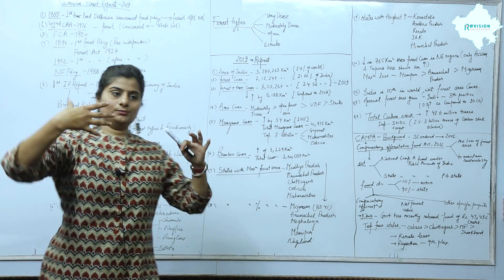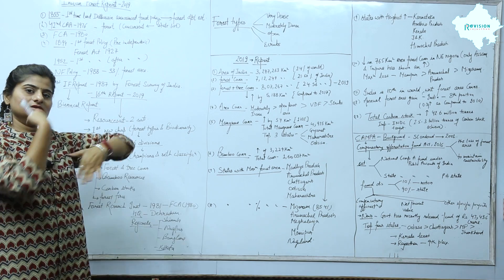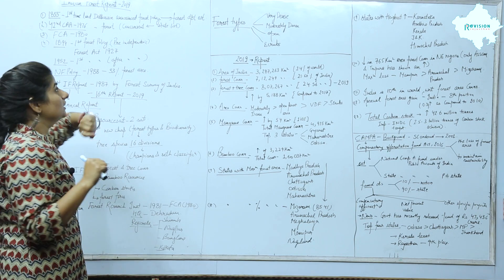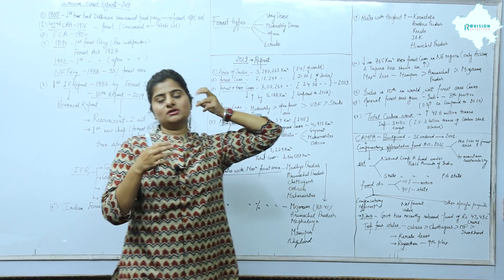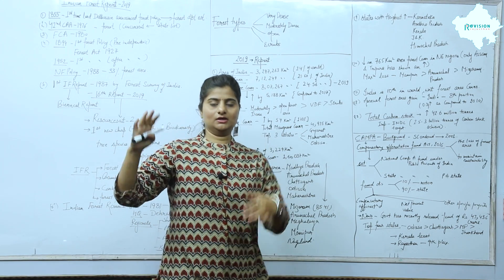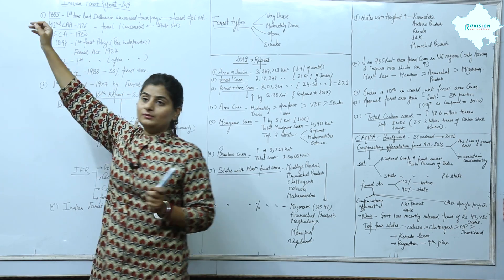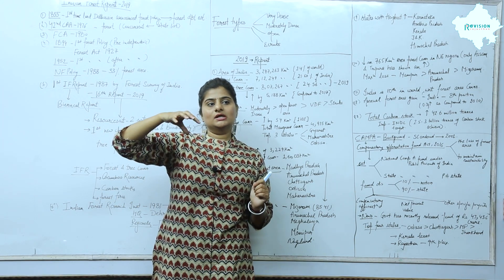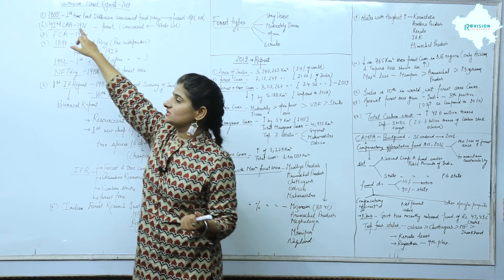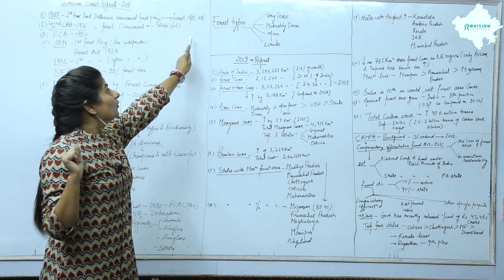First, in 1855, during the pre-independence era, Lord Dalhousie announced the Forest Policy for the first time. Before this, forests were not under government control — there was the same level of forest cutting with no proper rules and regulations. So in 1855, the Forest Department was established for the first time under Lord Dalhousie.